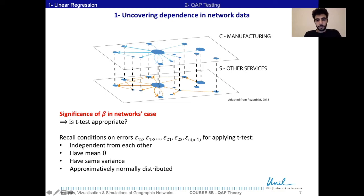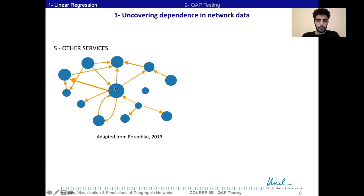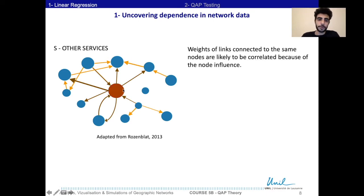But in the case of networks, we have this problem that generally the errors will not be independent from each other. Why? We focus on layer S of the network and consider all the links incident to the central node. These links are likely to be dependent because of the influence of the central node.